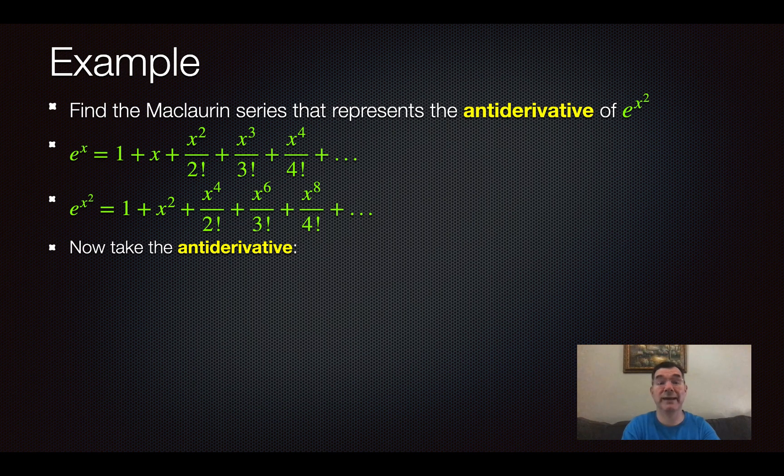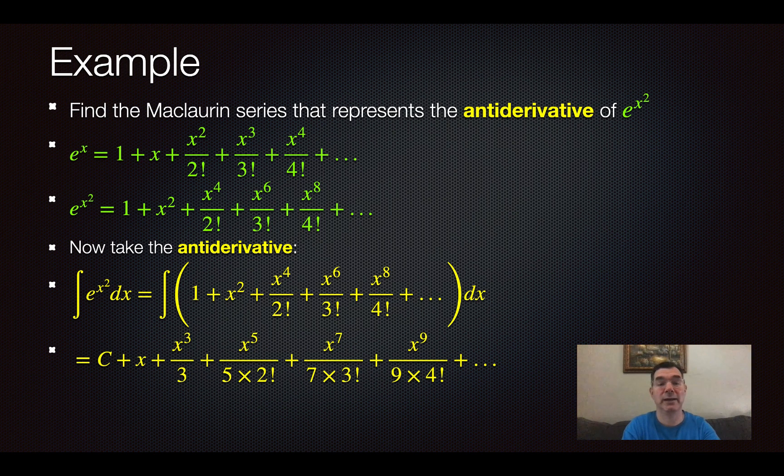So if I take the antiderivative, again, term by term, because it's not complicated, I'm going to get that it is the antiderivative of that same thing that I just wrote. So term by term, I always have to have a constant of integration. Then the antiderivative of 1 is going to be x. The antiderivative of x² is going to be x³ over 3 and so on. So that's how I get my antiderivative of e^(x²).